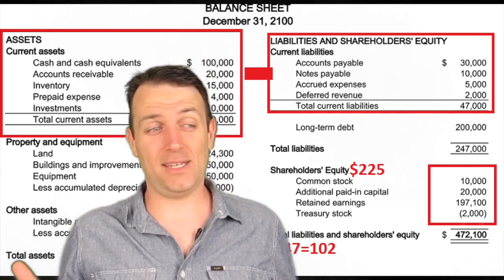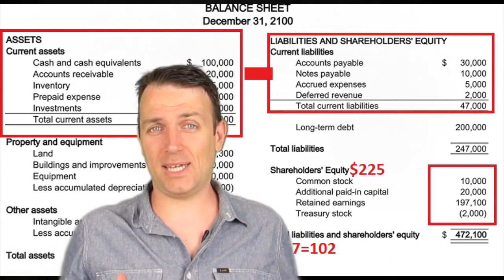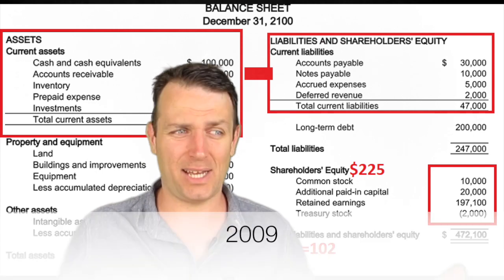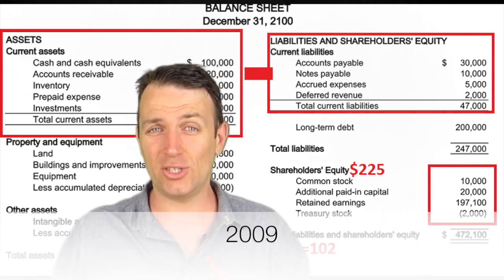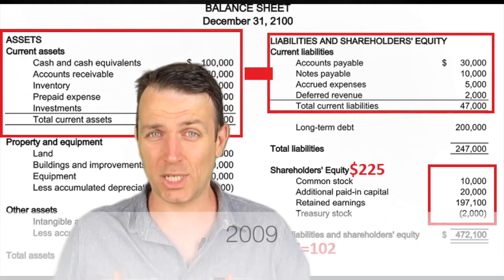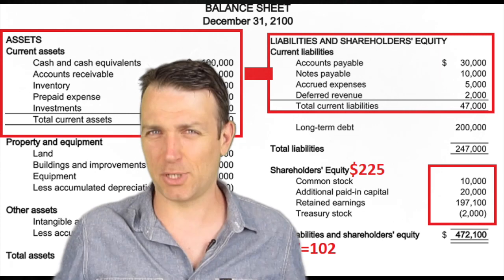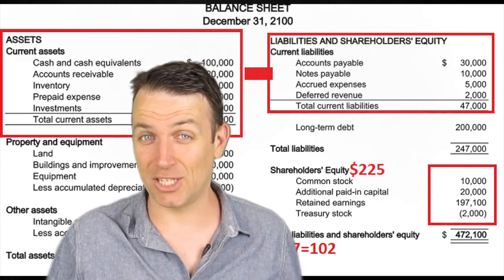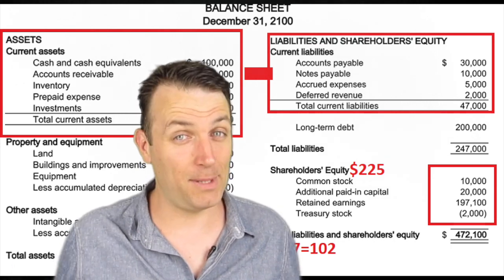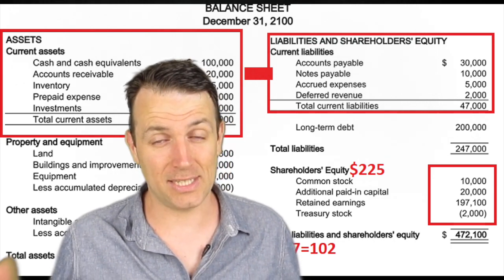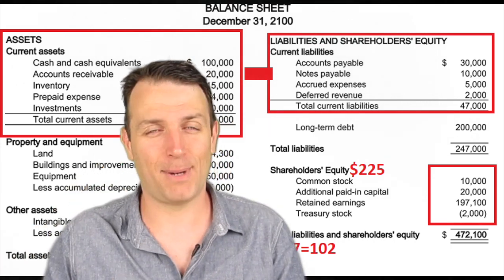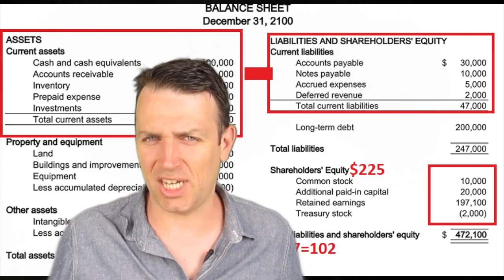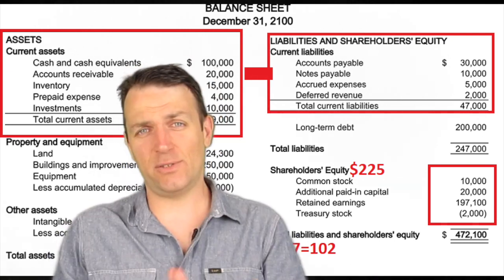If you stick to that strategy over the long term, opportunities will come. In 1999-2000 there were stocks trading below working capital, and in February-March 2009 around 2,000 stocks were trading below cash per share — a big opportunity. There may be new opportunities, so keep the strategy in mind and don't chase it — be ready when it comes to you.